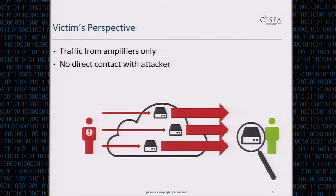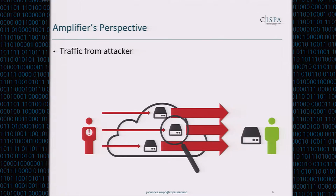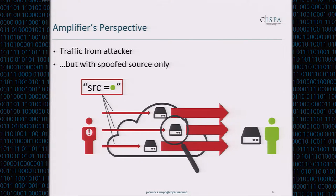If we look at such an attack from the victim's perspective, the victim receives a lot of traffic, but only from the amplifiers. The traffic at the victim has no direct contact with the attacker, so it's of very little help in finding the attacker. From the amplifier's perspective things look better at first, but all the traffic they receive has spoofed source addresses, so it's also not of much help.